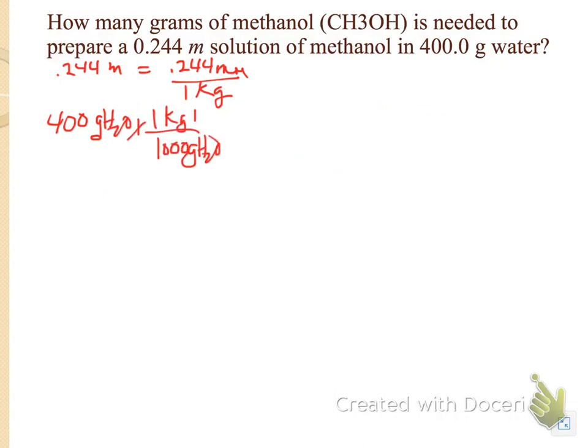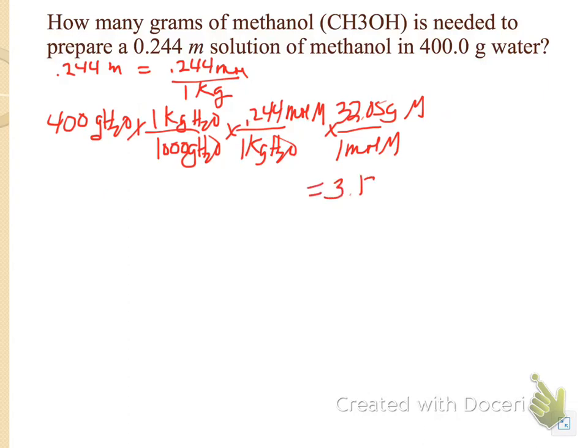If I take 400 grams of water, I know 1,000 grams is 1 kilogram. I know, based on the molality, that 1 kilogram of water is 0.244 moles of methanol. And I know that 1 mole of methanol, if I'm trying to find grams, is 32 grams. So if I multiply all this out, I get a value of 3.13 grams of methanol.